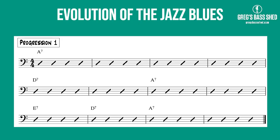First I'm going to show you the most basic traditional 12-bar blues chord sequence and how it can evolve over four choruses into the jazz blues progression. This is the basic 12-bar blues — probably a lot of you know this sequence. We've got four bars of A7, that's called 1. Then two bars of D7, that's called 4. Then two bars of A7, a bar of E7 called 5, a bar of D7 called 4, and two bars of A7 called 1.